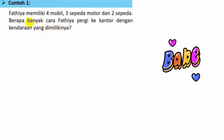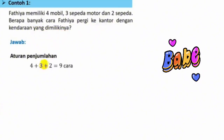Contoh 1: Fathiyah memiliki 4 mobil, 3 sepeda motor, dan 2 sepeda. Berapa banyak cara Fathiyah pergi ke kantor dengan kendaraan yang dimilikinya? Tidak mungkin Fathiyah menggunakan kendaraan secara sekaligus, jadi ini berupa pilihan. Kita menggunakan aturan penjumlahan: 4 tambah 3 tambah 2. Banyak cara Fathiyah pergi ke kantor adalah 9 cara.